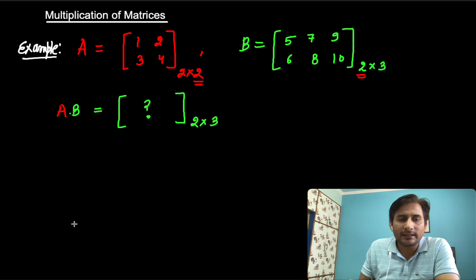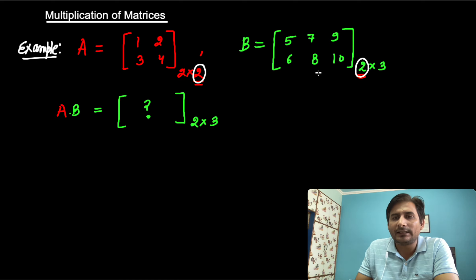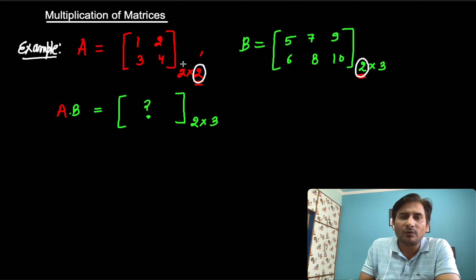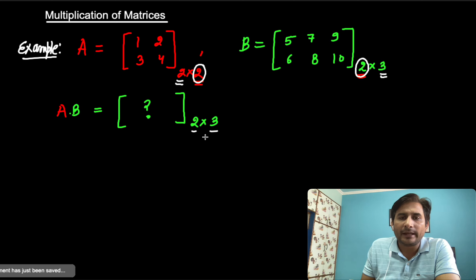First we will check whether these matrices can be multiplied or not. To check this, the columns of the first matrix and the rows of the second matrix must be the same. Since they are the same, these matrices can be multiplied. Then the order of the new matrix A×B will be determined by the rows of the first matrix and the columns of the second matrix. So the order of A×B is 2×3.